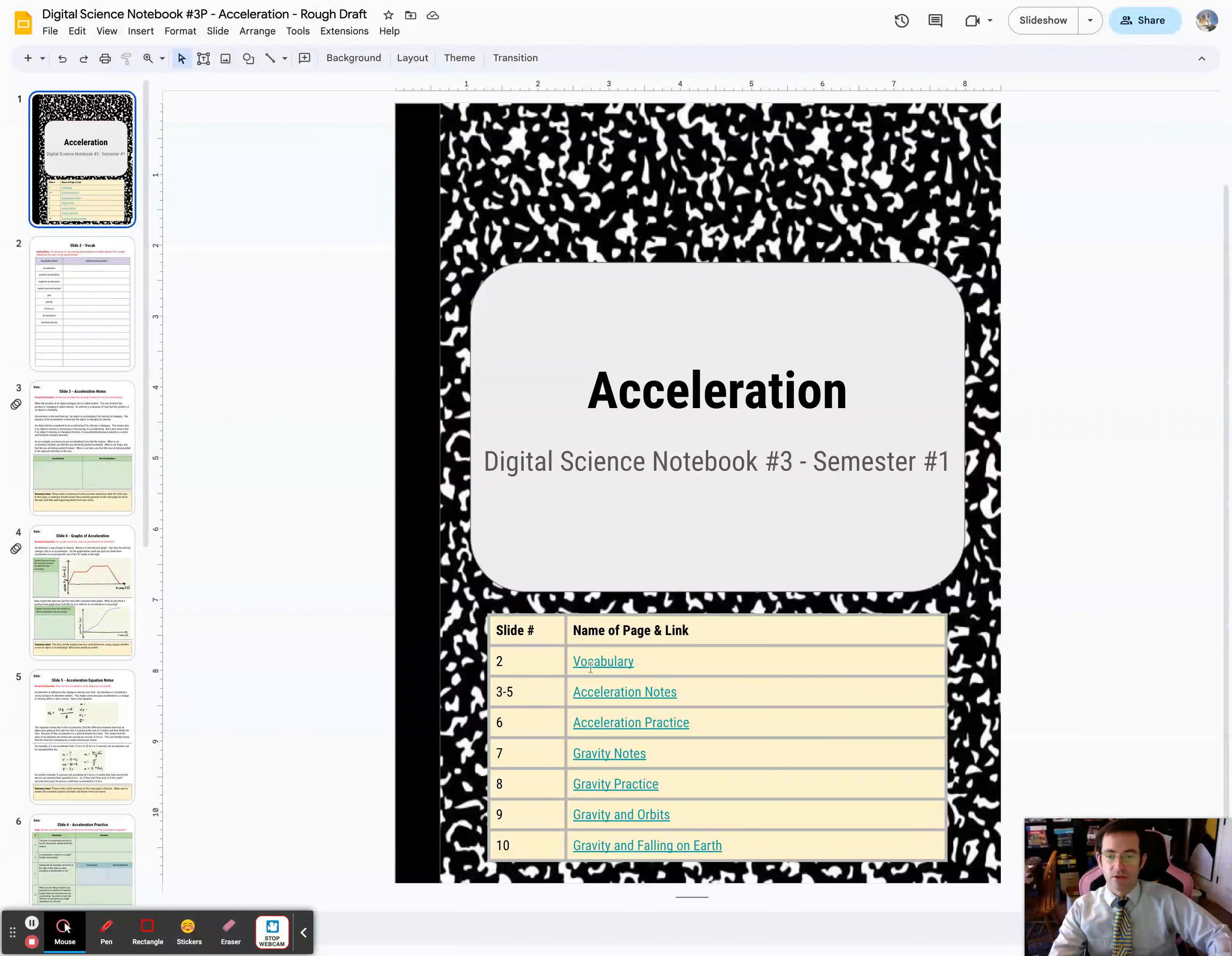We're going to cover a few things. Slide two is going to be vocabulary, no concept map this time because it's a shorter notebook. There's going to be a bunch of notes about acceleration - notes about what it means, notes about the equation, notes about graphing a little bit.